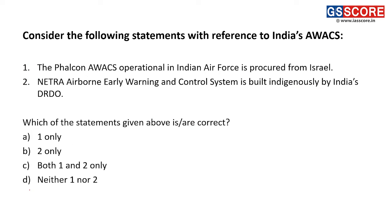Next question: consider the following statements with reference to India's Airborne Early Warning and Control System (AWACS). First statement: the Falcon AWACS operational in the Indian Air Force is procured from Israel. This is correct — the Falcon AWACS are procured from Israel and are used for enhancing air security. Second statement: the Netra Airborne Early Warning and Control System is built indigenously by DRDO. This is also correct.